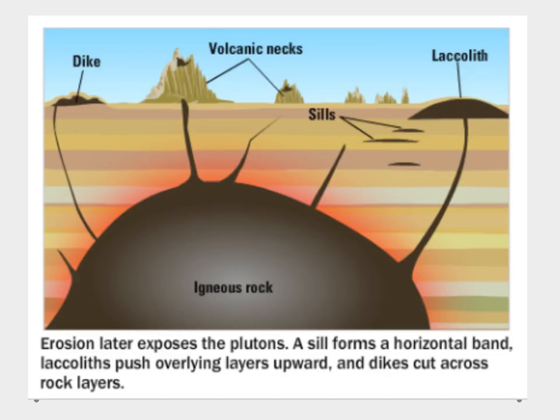When we're talking about plutons, we have to talk about several different things. One of them are going to be sills. Sills are where magma comes up and falls in between layers of rock, and it's going to be almost always horizontal with the surface. It's where magma seeps between the layers of the rocks and hardens that way.